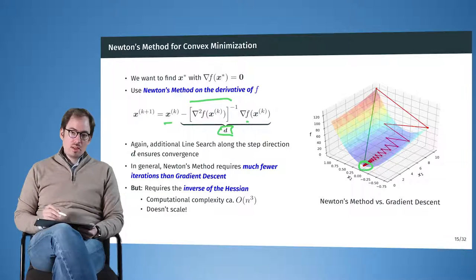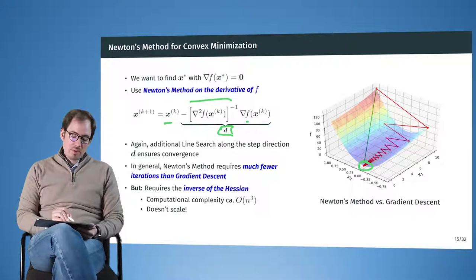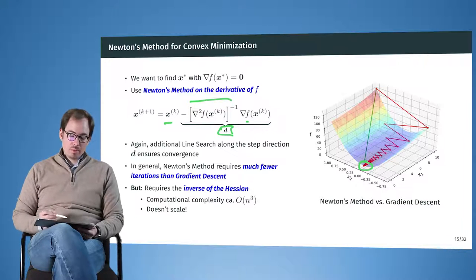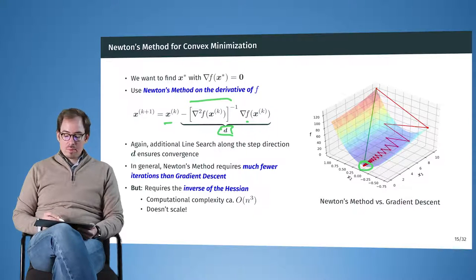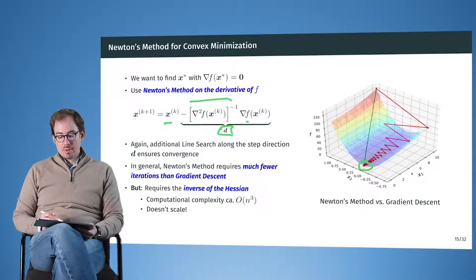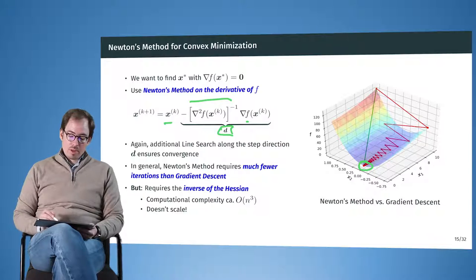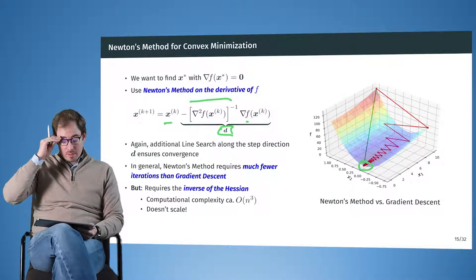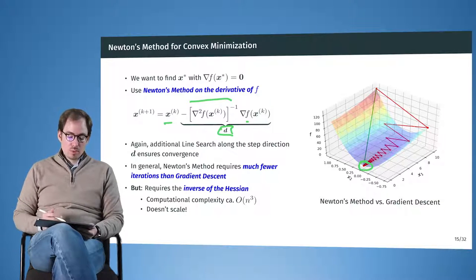However, each iteration is now a little bit more expensive, because we have to evaluate the Hessian, and we have to invert the Hessian. And in large dimensional problems, this quickly becomes computationally difficult. So for this low dimensional problem, it is always better to directly use Newton's method.